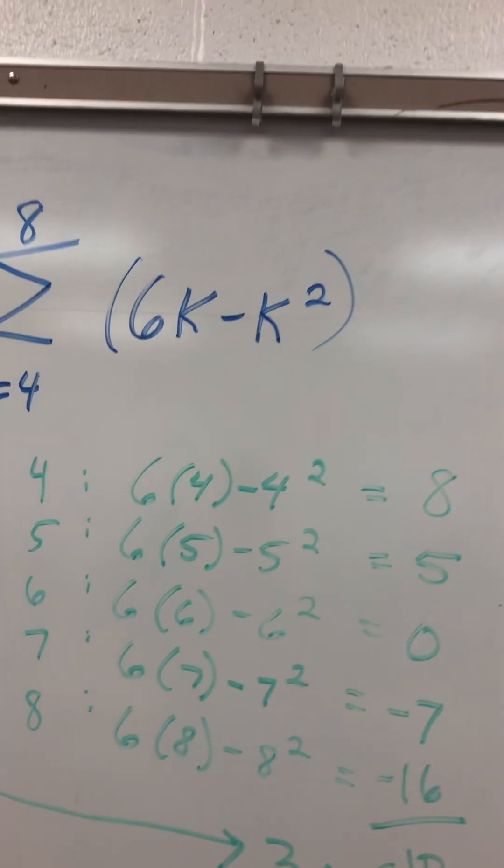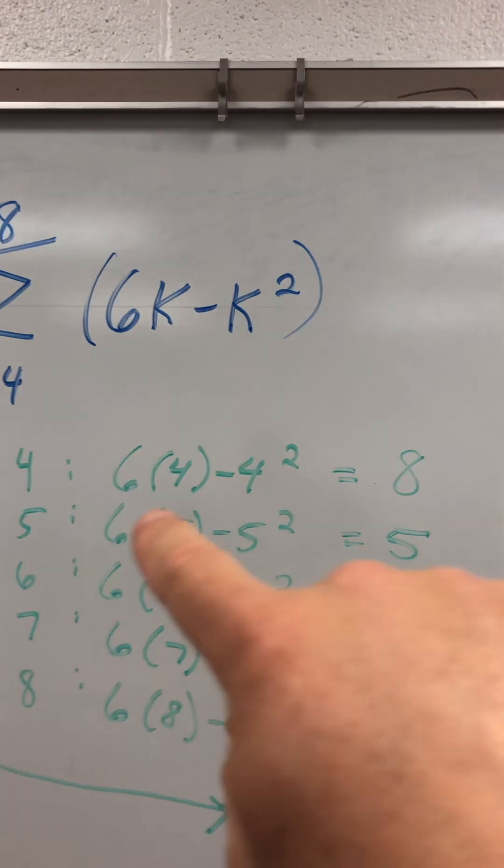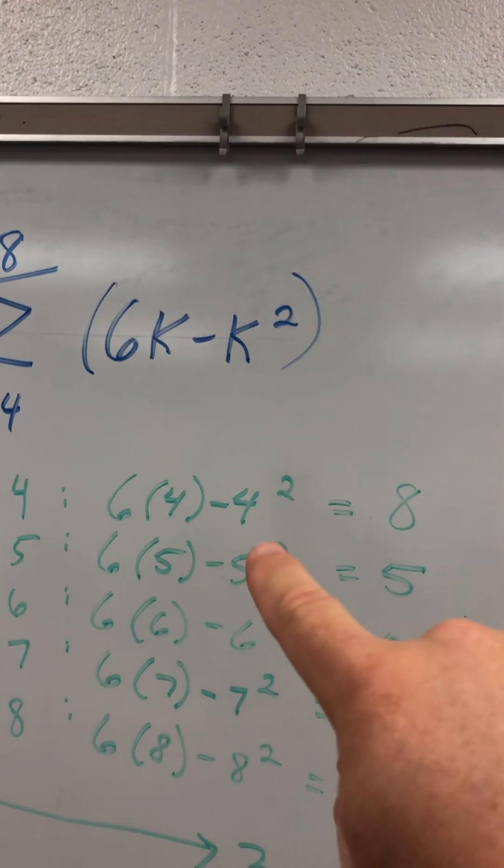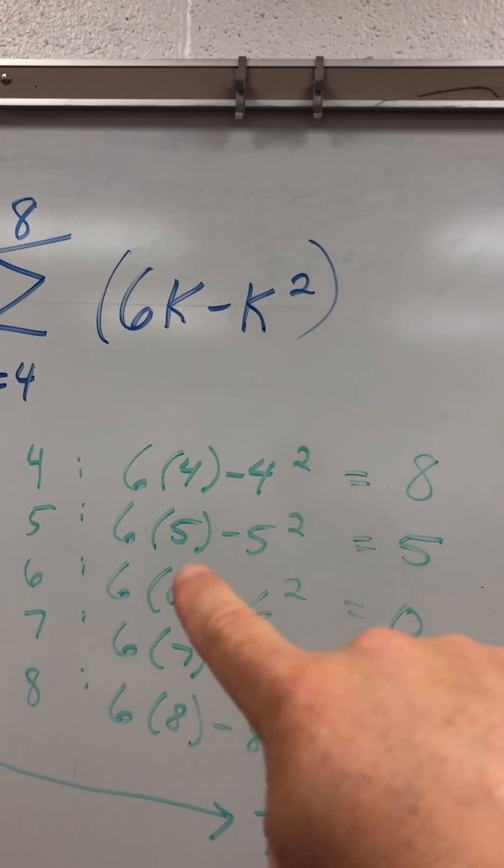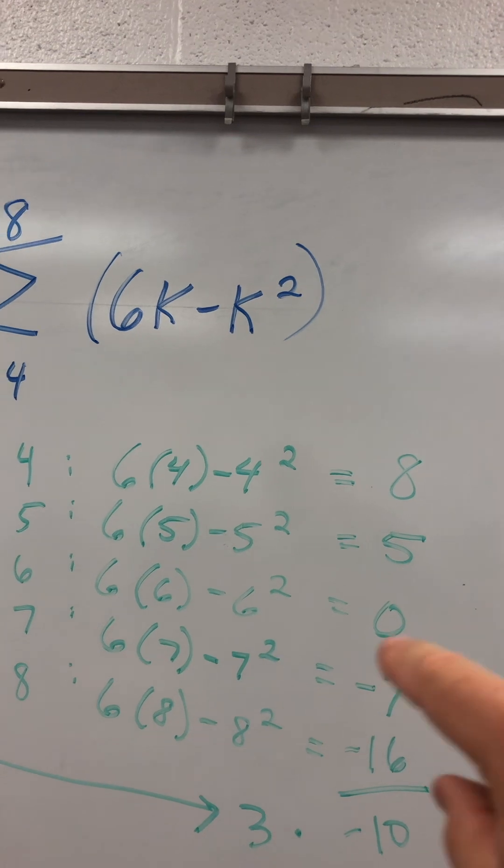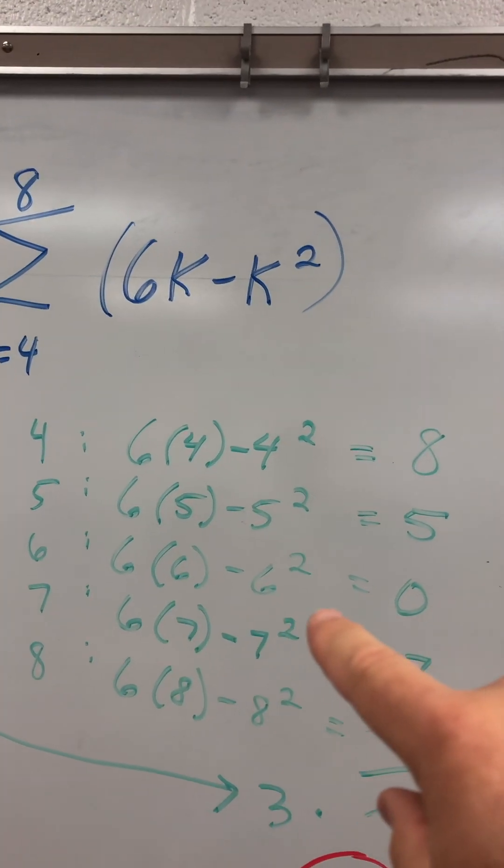So what is 6 times 4 minus 4 squared? 8. 6 times 5 minus 5 squared? 5. 6 times 6 minus 6 squared? 0.